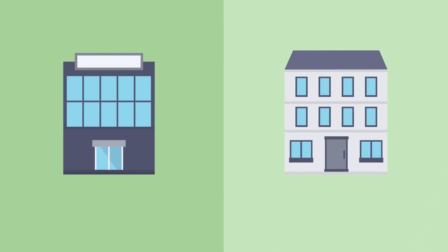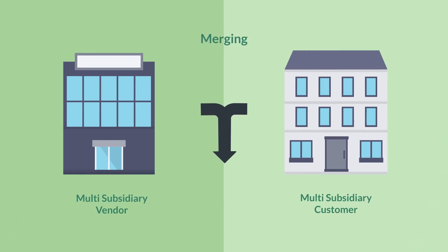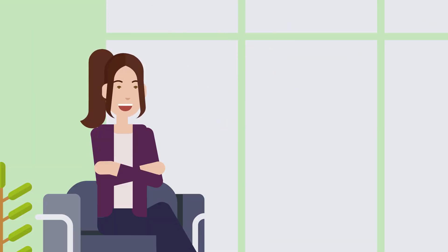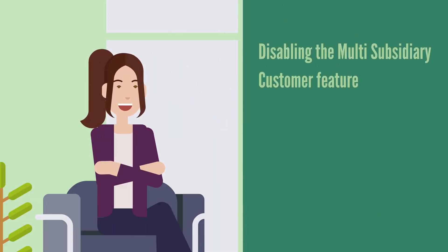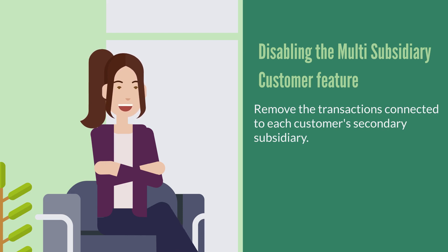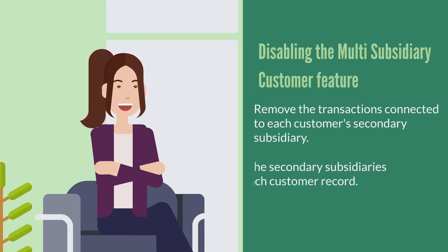Another aspect of this feature that might be useful to know is that you can merge a multi-subsidiary customer with a multi-subsidiary vendor. This would allow you to have just one entity for both a customer and a vendor. And finally, if you ever find yourself in the position of needing to disable this feature, you should know that it will not be simple. Before you can disable the multi-subsidiary customer feature, you would first have to remove all the transactions that are connected to each customer's secondary subsidiary. Then you would need to remove all secondary subsidiaries from each customer record.